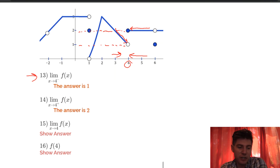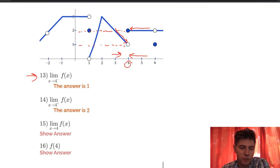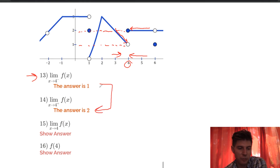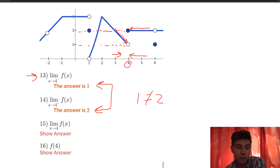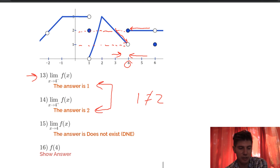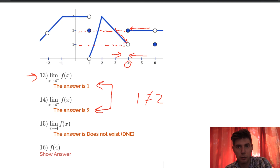Number 15: what is the limit as x approaches 4 of f of x? Anytime you have the two-sided limit, you compare the left and right limits. 1 does not equal 2, so the left limit does not equal the right limit, which means the limit itself does not exist. We would need them both to be equal for the limit to exist.